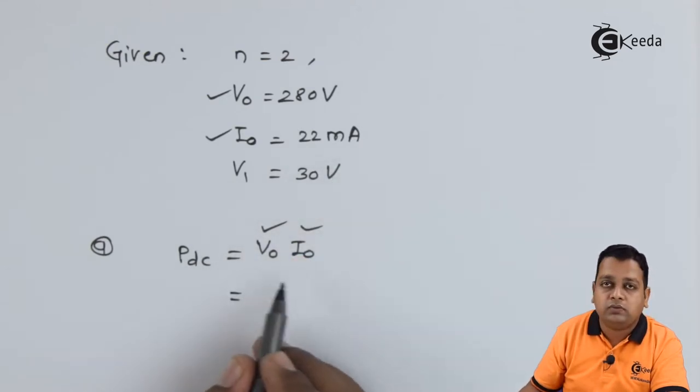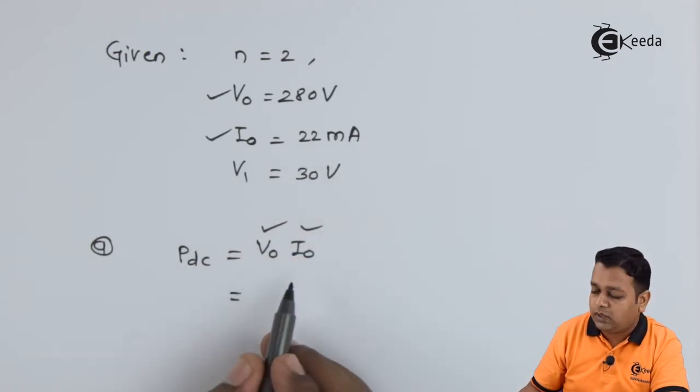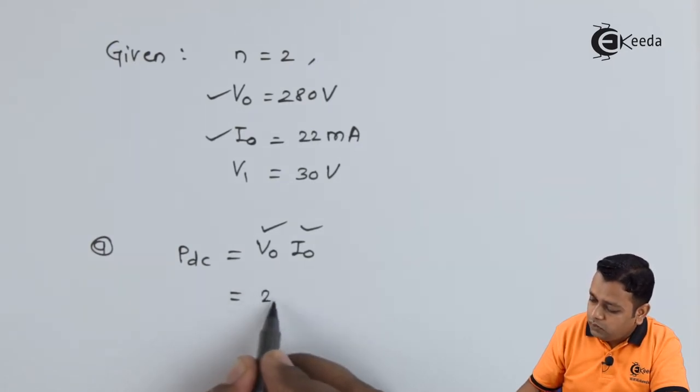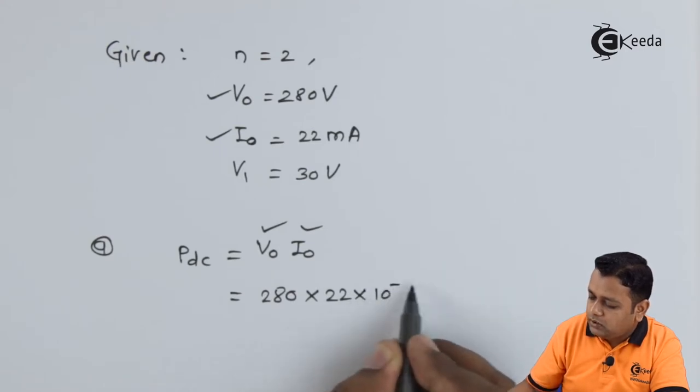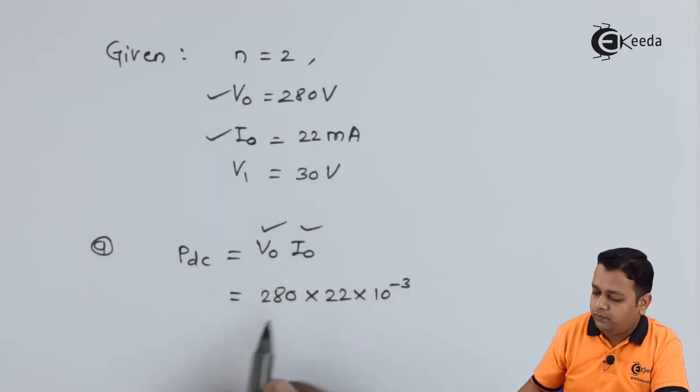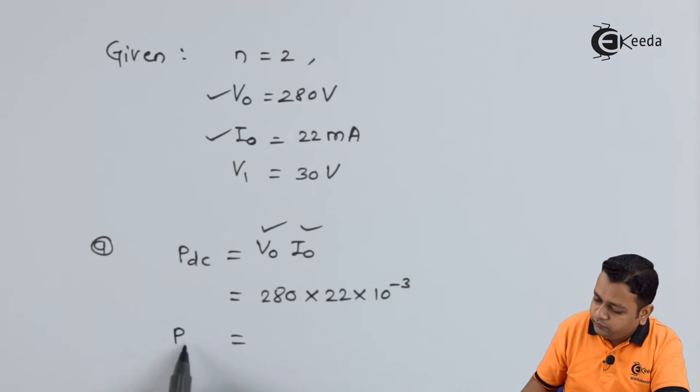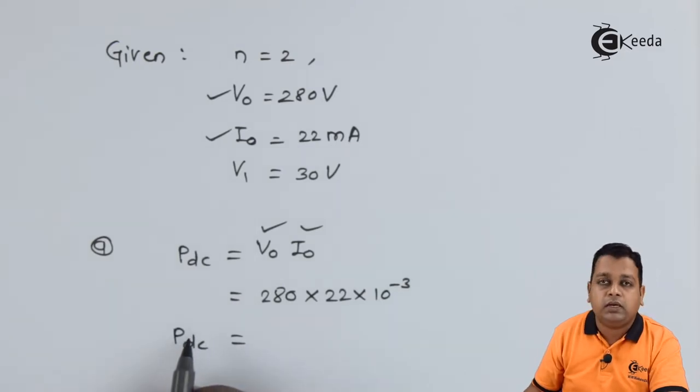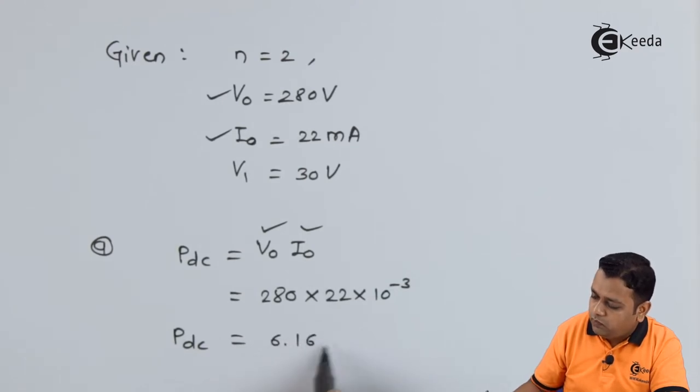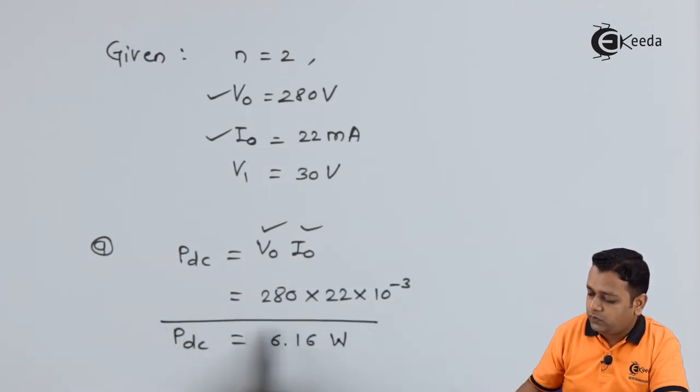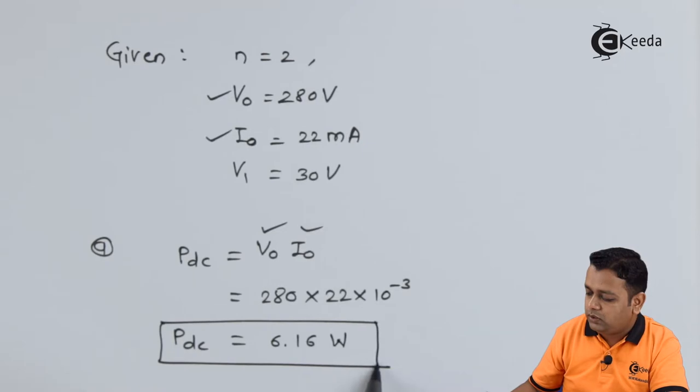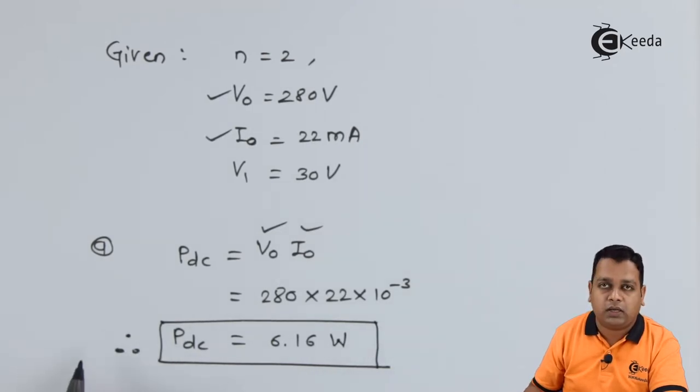So here we put the values and make the multiplication. So by the next step we have 280 in multiplication to 22 into 10 raised to power minus 3 for the milli. So this gives us P_DC that is the input power for the reflex klystron is equal to 6.16. As it is the power the SI system of units gives us watts. So I outline this particular value. So this is the answer for part a.